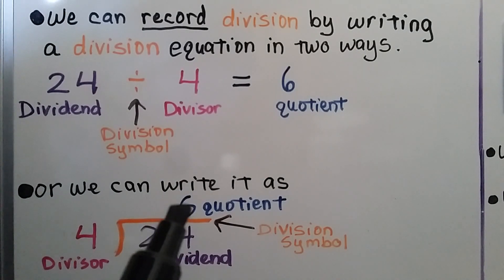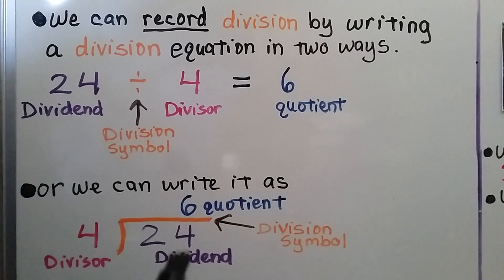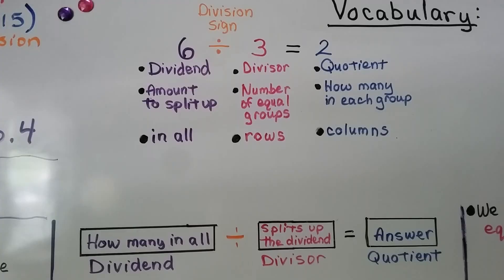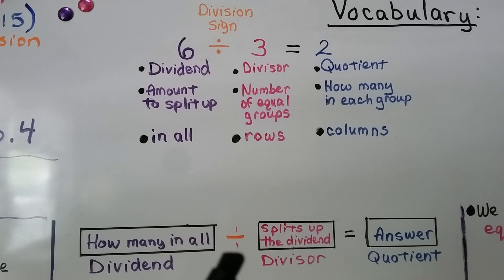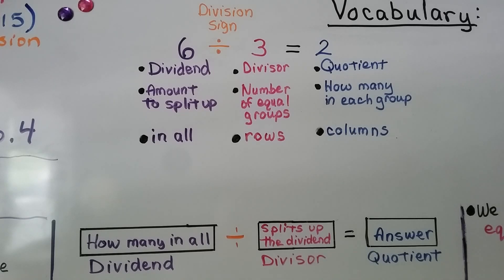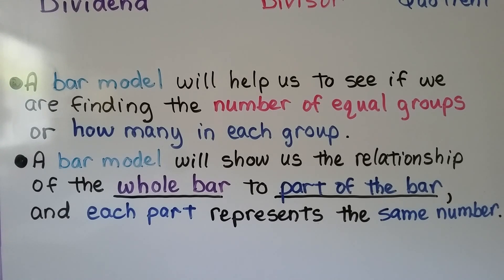Our quotient is above the dividend. Because we have a 6, which is six ones, it's written over the 4 in 24 because that's the ones place. In a division equation in sentence form, the first number is the dividend - how many in all. We have our division sign, and we have a divisor that splits up the dividend. Our answer is the quotient. A bar model shows the relationship of the whole bar to its parts, and each part represents the same number.